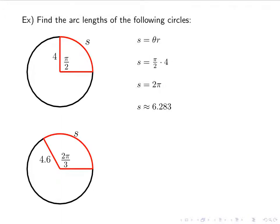Let's try another one. Again, we've got a segment of a circle. The angle is 2π/3, radius 4.6, and we're looking for the arc length. S equals θr. Our angle is in radians already, so I can just plug it in. I have my radius, 4.6 times my angle, 2π/3. I'll plug that into the calculator, and I'll get 9.634, whatever the units happen to be.